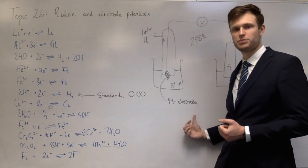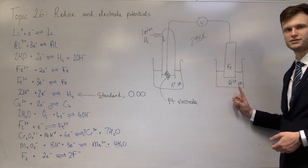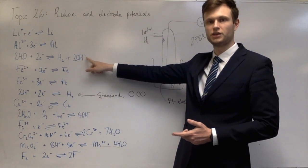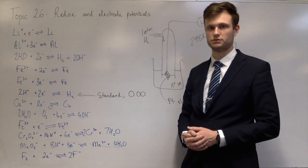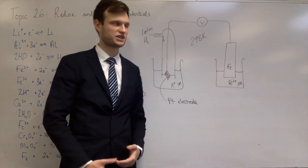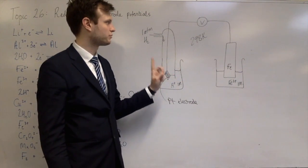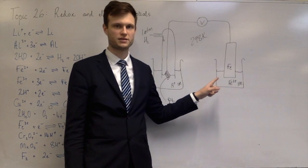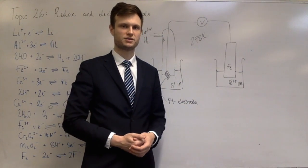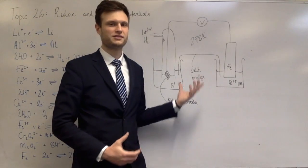Over here I've used iron as the electrode because iron is in the equation I chose. But if I had used a half-equation without a metal, I'd use a platinum electrode. I've used one molar solutions for the acid and for the iron 2+, everything is at 298 K, and the hydrogen is at one atmosphere. There's one other thing needed: a salt bridge to complete the circuit. The salt bridge allows ion transfer between the two solutions, and is normally just a piece of filter paper soaked in potassium nitrate.